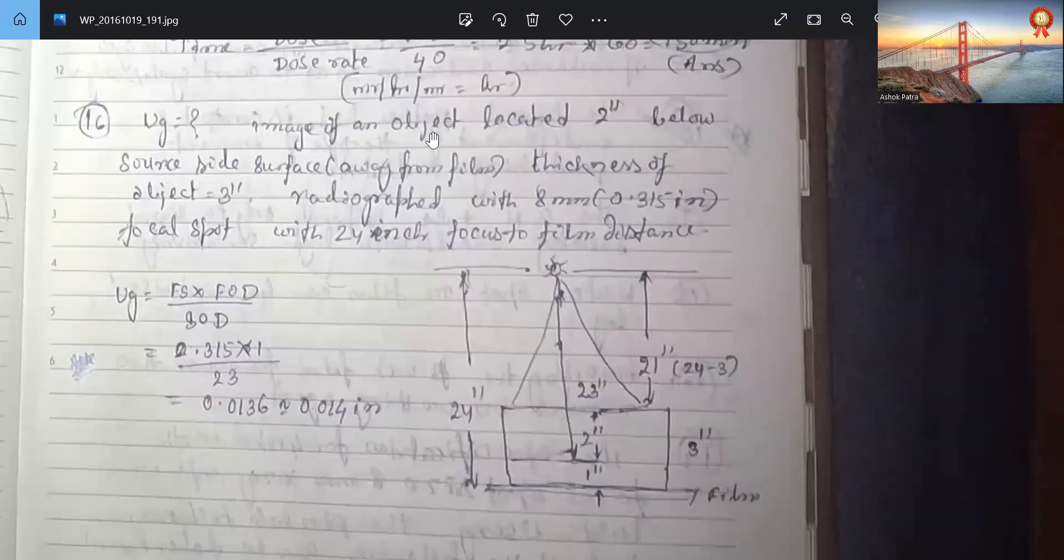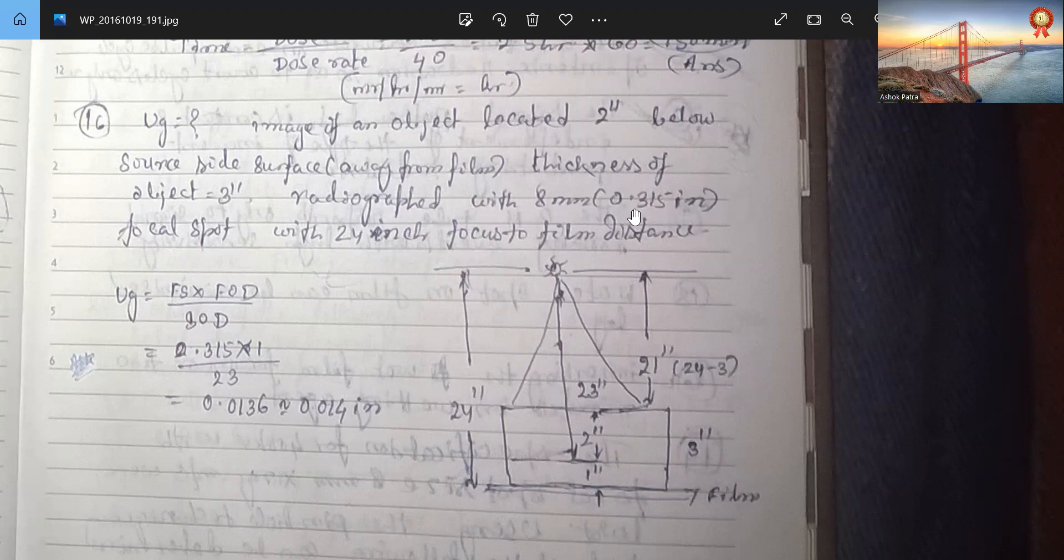EUD calculation. Image of an object located 2 inches below the source side surface away from the film. The thickness of object is 3 inches. Radiograph with 8 mm, 0.315 inch focal spot with 24 inch focus to film distance. Everything is in inches, so take inch you will get inch. 0.315 into 1 FOD.